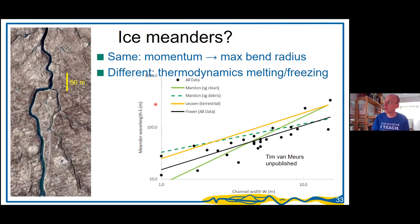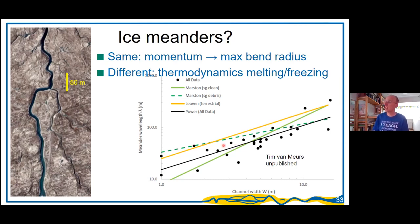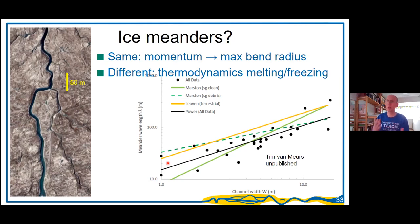Nevertheless, that flow momentum appears sufficient to lead to dimensions similar to meandering rivers. The vertical axis shows meandering wavelength and the horizontal axis shows channel width. Data from a bachelor student collected for the Greenland ice cap plots along the orange line derived from the big statistical relation I showed earlier for rivers — it's not significantly different, perhaps a factor of two lower, but the variation is a factor of three anyway. So in general, these ice meanders have about the right sizes.